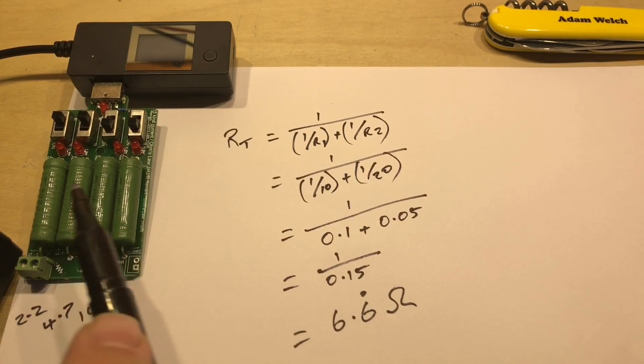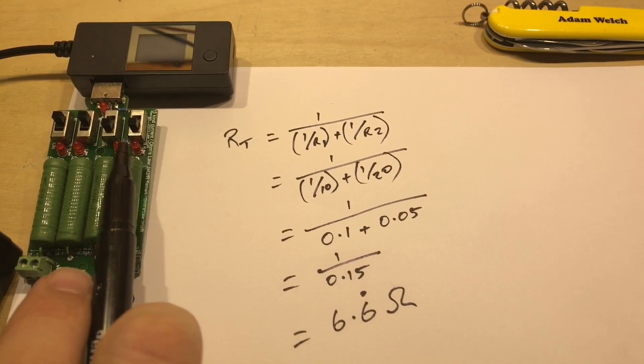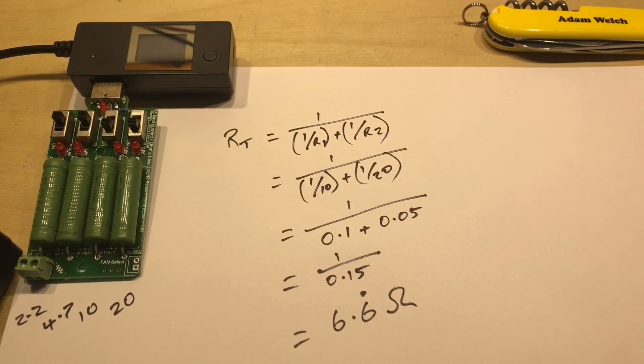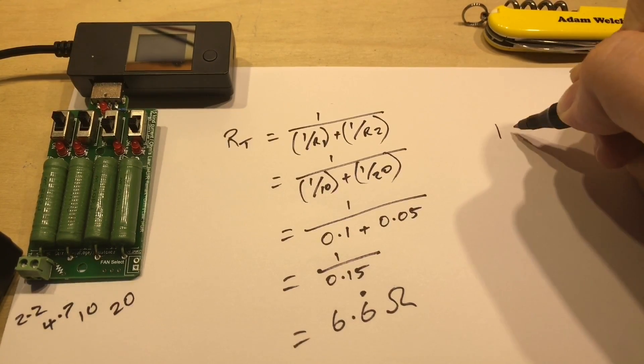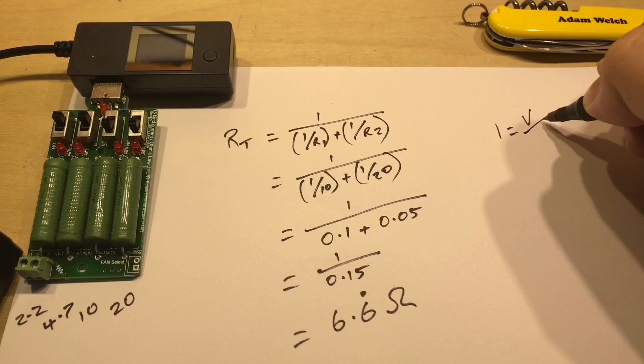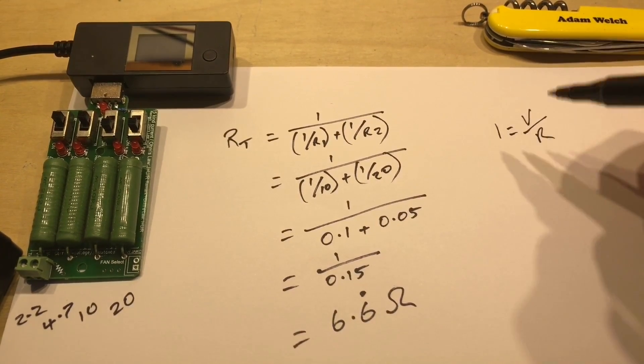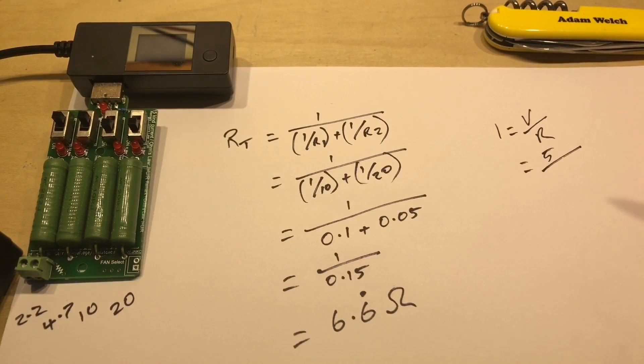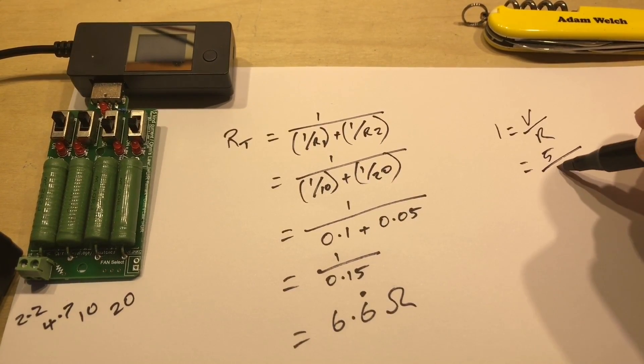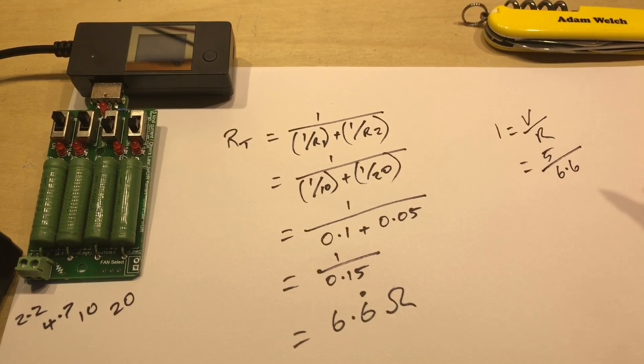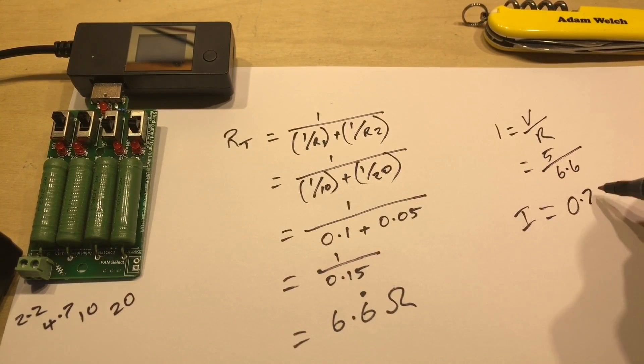So we've worked out the value of resistance with those two switches turned on, but now we need to work out the current that we're going to see on the meter. Well as we're also reminded on the silk screen, I equals V divided by R, current equals voltage divided by resistance. Well 5 volts isn't it? It's USB and the resistance is 6.6, so I equals 0.75 amps.